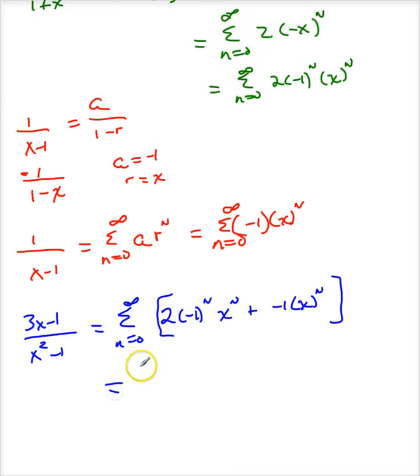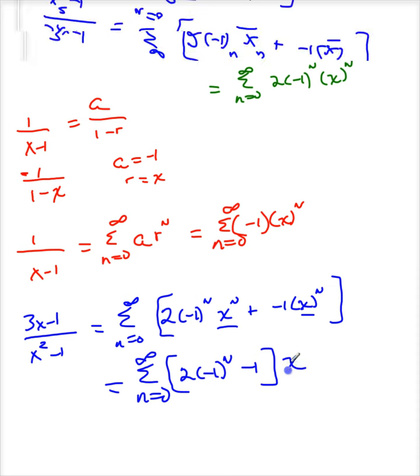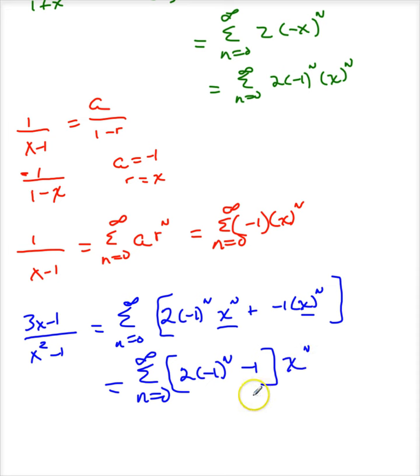Let me factor the x to the n out. This will be the sum as n goes from 0 to infinity, I'm going to factor that out of 2 times negative 1 to the n minus 1, all times x to the n. And of course it converges for the absolute value of x less than 1, and the interval of convergence is negative 1 to 1.